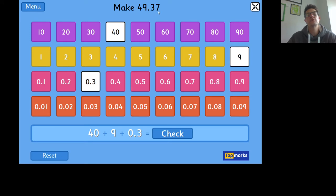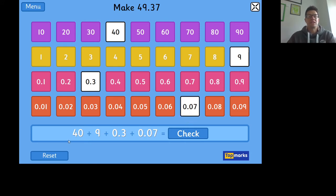Then we're moving to the hundredths—that would be 0.07. Now it's giving us an addition at the bottom to check our answer: 40 + 9 + 0.3 + 0.07 gives us 49.37.